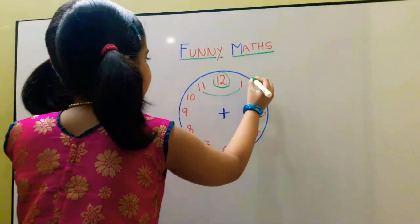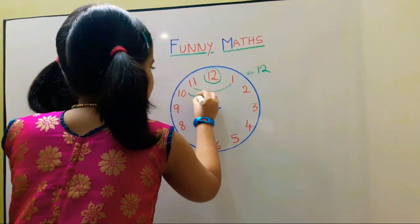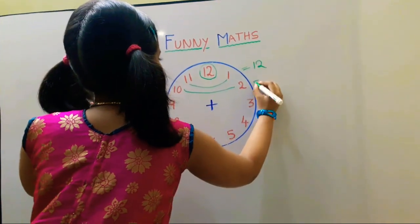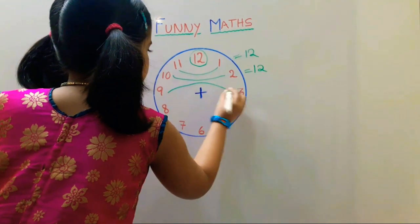11 plus 1 is equal to 12. 10 plus 2 is equal to 12. 9 plus 3 is equal to 12.